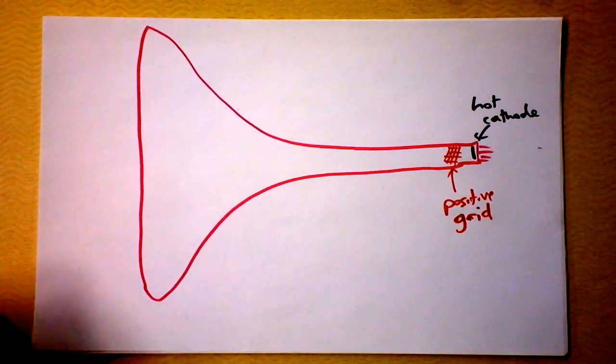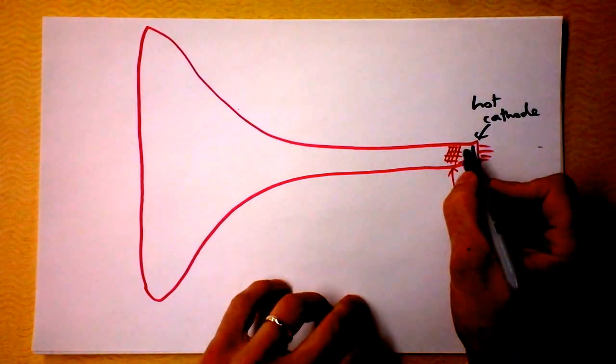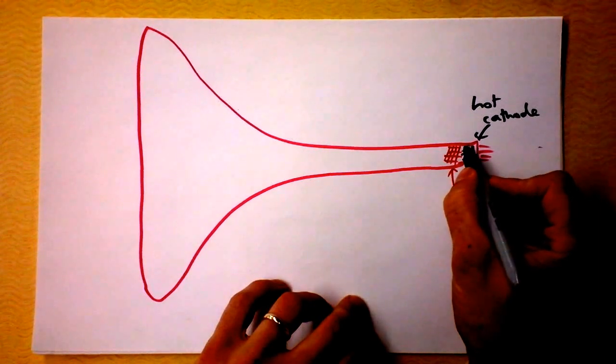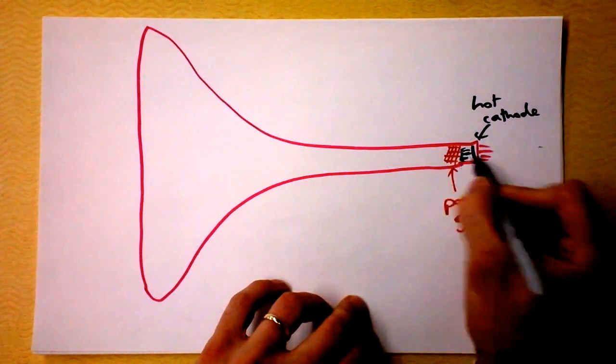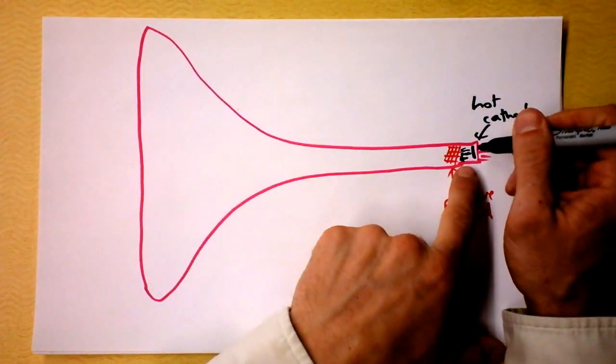Now, what would happen is the hot cathode is spewing electrons off. Electrons go pew, pew, pew, and they want to go that way because there's a really big electric field inside here.